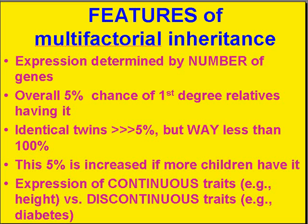If you have a disease which is regarded as multifactorial, you have an overall 5% chance that your first degree relatives have it or will have it, like your kids or your parents. If you're an identical twin that has it, that chance is a lot bigger than 5%, but it's really way less than 100% as well. Remember, we're talking about soil, not genes.